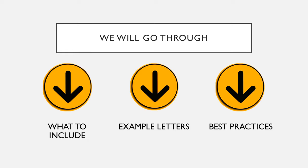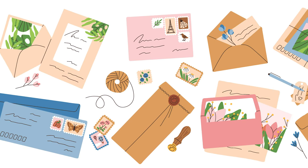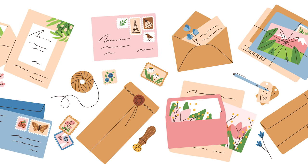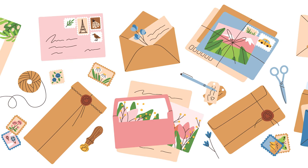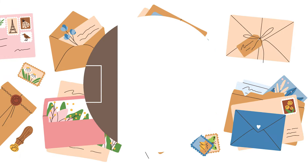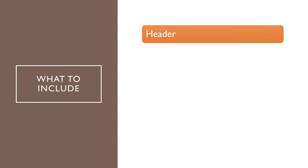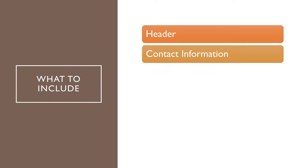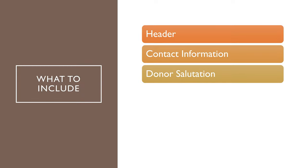Let's get started. It's important to note, donation letters vary from one non-profit to the next and for each fundraising campaign you run, but the core elements should remain the same. These include: number one, the header — include your non-profit's name and branded logo if you have one. Number two, contact information — include your physical address and phone number. Listing a contact person, non-profit website and email address, although helpful, is optional.